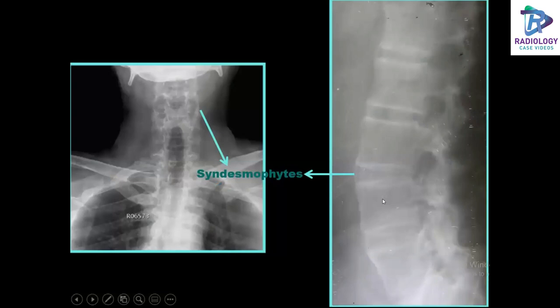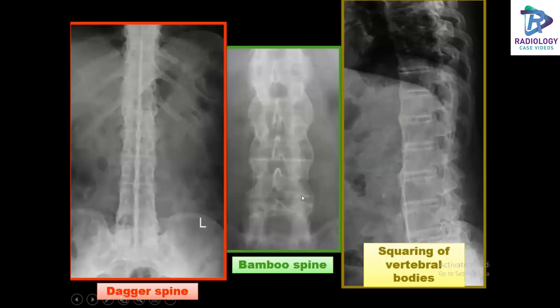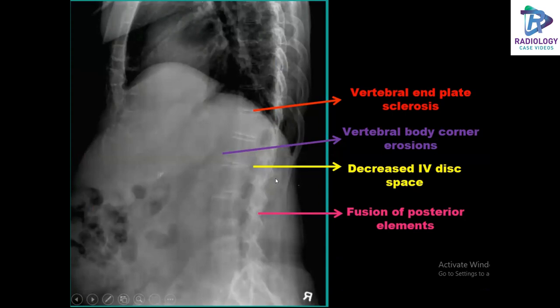These are frontal and lateral radiographs of the spine showing the most commonly found features: the dagger spine, the bamboo spine, and squaring of vertebral bodies. Lateral radiographs of the spine also show vertebral end plate sclerosis, vertebral body erosions in the corners, decreased intervertebral disc space, and fusion of the posterior elements.